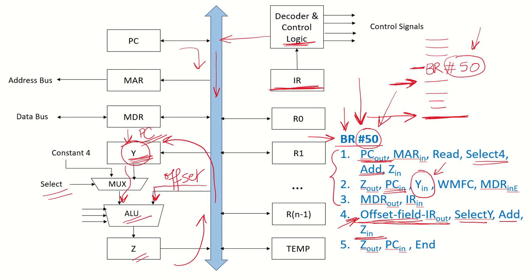In one clock cycle only one unit can output contents on the single bus. So in clock cycle 4, the IR bits were out on the bus; then Z puts out its content on the bus in the next clock cycle, and it is loaded into PC — this is the end of the instruction. When the next fetch cycle begins, PC will contain the target address, which is the address from where the next instruction has to be fetched.